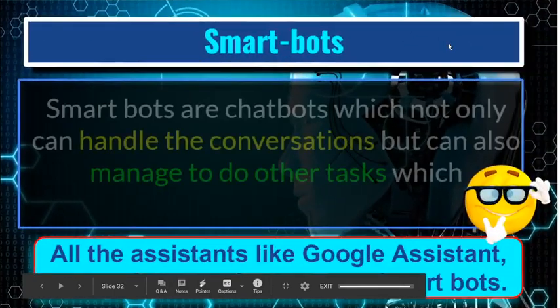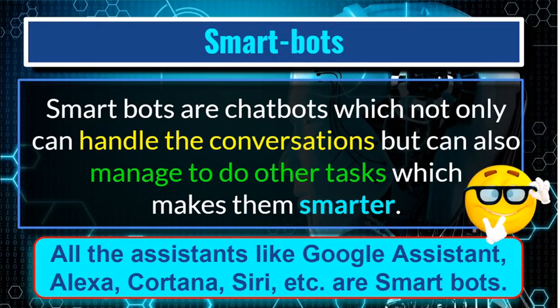The next type of chatbot is the smart bot. Smart bots are chatbots which not only handle conversation but can also manage other tasks, which makes them smarter. For example, Google Assistant — if you give the order 'Hey Google, make a call to my mother', it will respond and make the call. All assistants like Google Assistant, Alexa, Cortana, and Siri are smart bots because they not only help you converse but also manage other tasks.